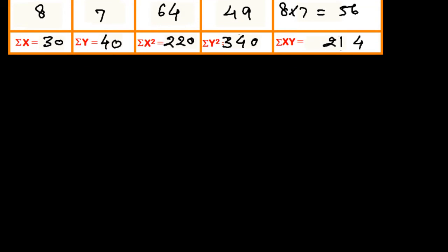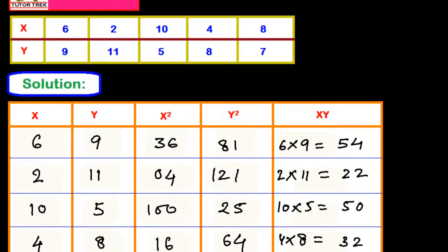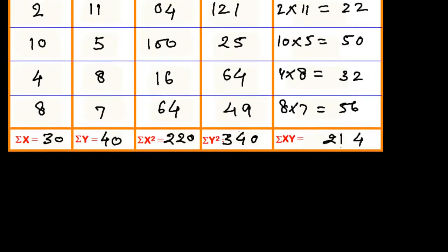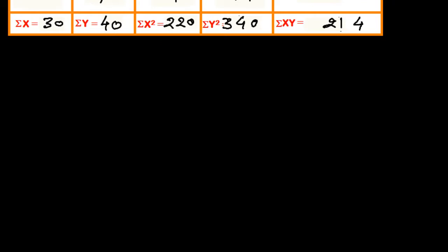The formula is: r equals n times summation of xy minus summation of x times summation of y, over the square root of (n times summation of x-squared minus summation of x whole square) times the square root of (n times summation of y-squared minus summation of y whole square).